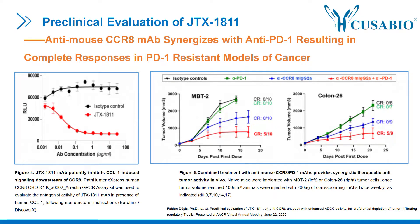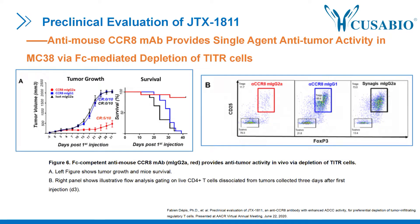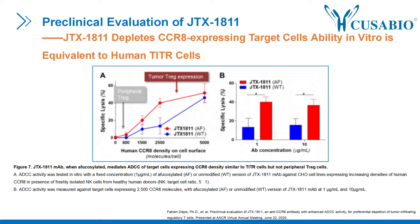Figure 4 shows that JTX-1811 monoclonal antibody can significantly inhibit CCR8 signaling induced by CCL1. Figure 5 shows that the combination of anti-mouse CCR8 monoclonal antibody and PD-1 monoclonal antibody has a good anti-tumor synergistic effect in a PD-1-resistant cancer model. Figure 6 shows that anti-mouse CCR8 MAb exhibits single-agent anti-tumor activity in MC38 via Fc-mediated depletion of target cells. Moreover, the ability of JTX-1811 to deplete CCR8-expressing target cells in vitro is comparable to that of human target cells. Combined with the preclinical data of JTX-1811 disclosed by Gilead, we have reason to believe that CCR8 can still be expected in the future.